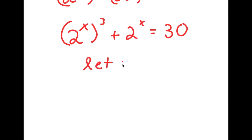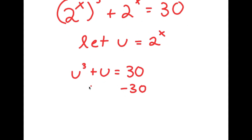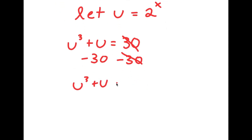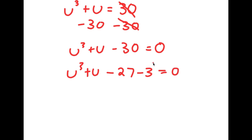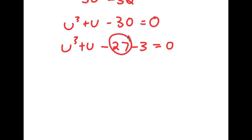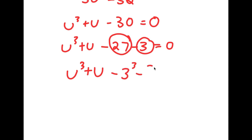Now I'm going to let the variable u equal 2 to the power of x. So if I substitute u for 2 to the power of x, I get u to the power of 3 plus u is equal to 30. Subtracting 30 from both sides, I get u³ plus u minus 30 equals 0. Now I'm going to rewrite 30 as 27 plus 3, because 27 is the same thing as 3 to the power of 3. Notice we have the form u³ plus u — we could think of u as 3 in this case.